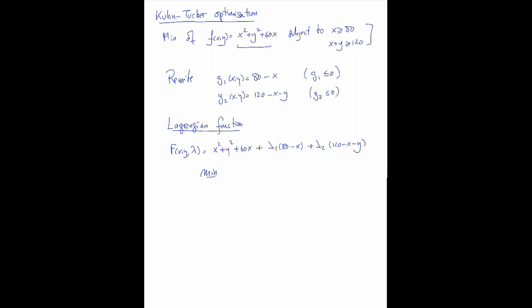In this case, we must have that lambda 1 and lambda 2 must be positive. And remember, the product of the lambda by the g's should always be zero. It's an easy case — we can do it by analysis of all the different cases. So we have four cases. First is when lambda 1 equals lambda 2 equals zero. Second case: when lambda 1 is zero and g2 equals zero, because we know the product of lambda with its corresponding g must be zero.